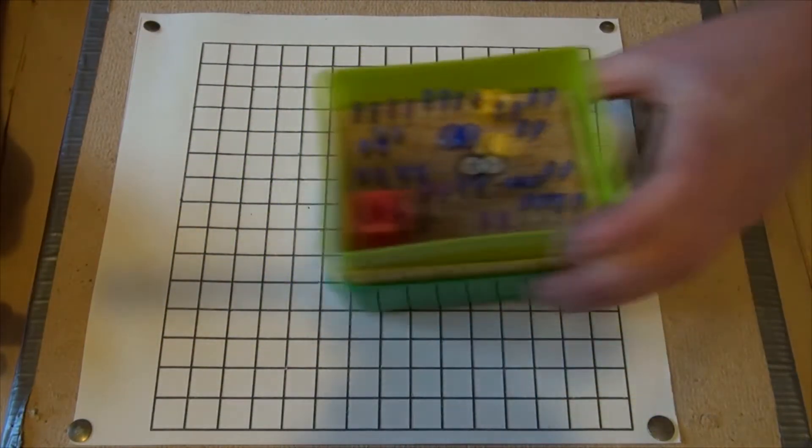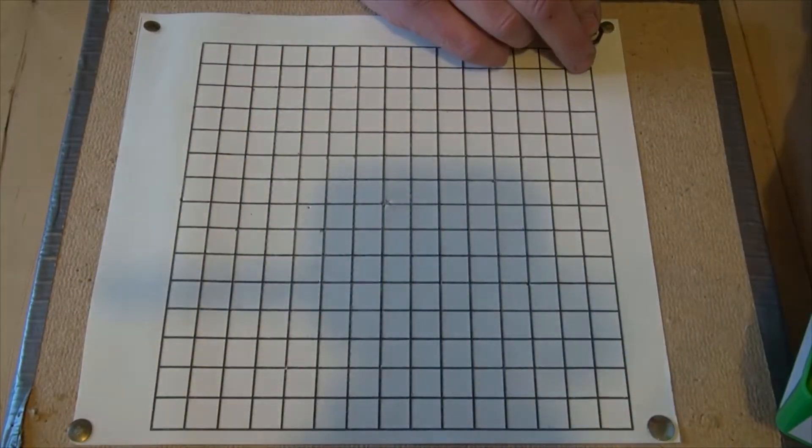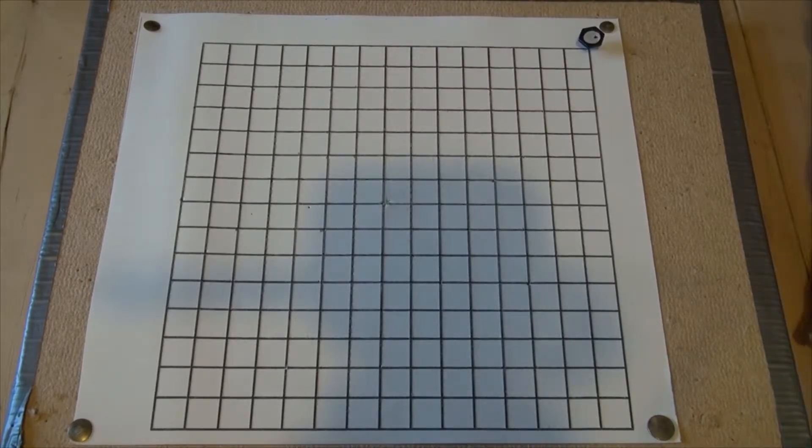So we'll start by placing the origin pin, that's the one with the hexagonal head, in the bottom left corner. There it is. So that's the standard origin, as if you're going to plot a graph.